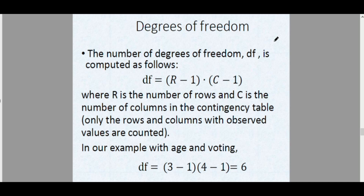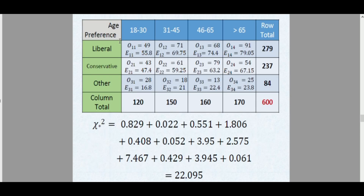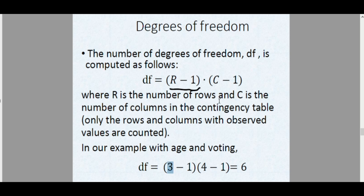Next, we compute the critical value. For the chi-square test, we need the degrees of freedom. Count the number of rows and columns — do not include the row total and column total rows. We have three rows (three voting preferences) and four columns (four age categories). The degrees of freedom formula is (rows − 1)(columns − 1) = (3 − 1)(4 − 1) = 2 × 3 = 6.